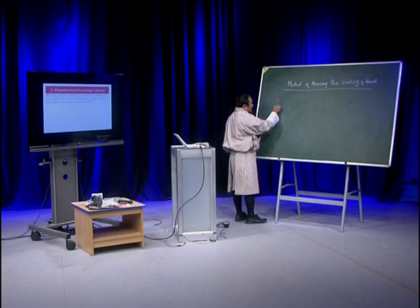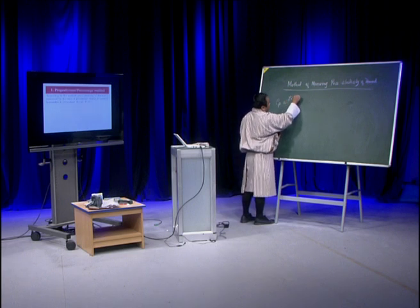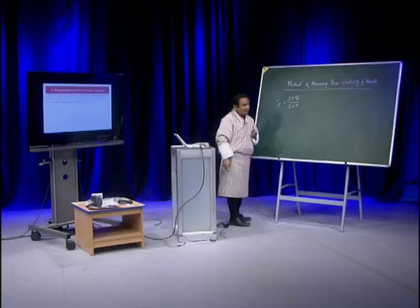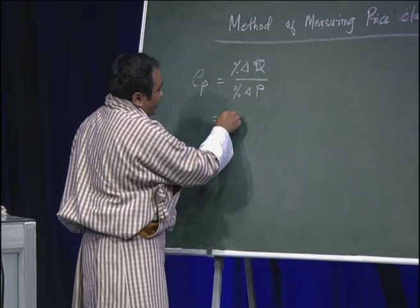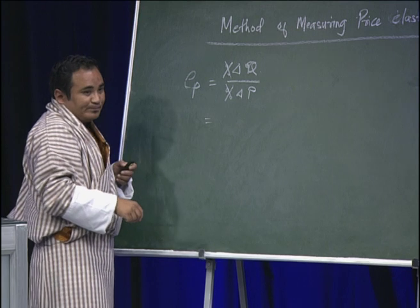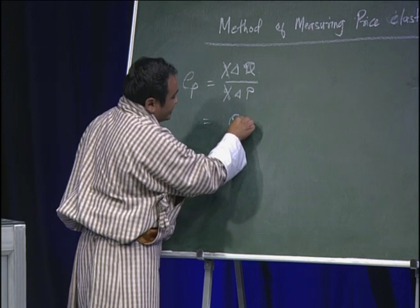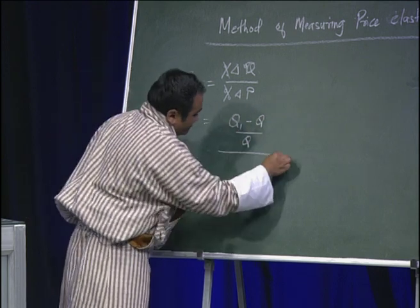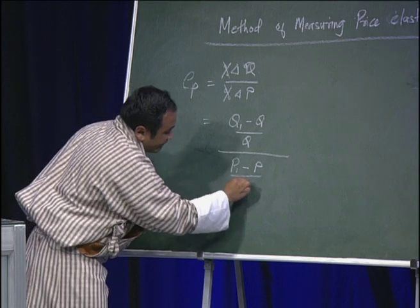When we say price elasticity of demand according to the percentage method, it is the ratio of percentage change in quantity to percentage change in price of a commodity. We can further simplify this formula. The percentage signs cancel, and we have: change in demand equals new quantity demanded minus initial quantity divided by initial quantity, all divided by new price minus initial price divided by price of the commodity.